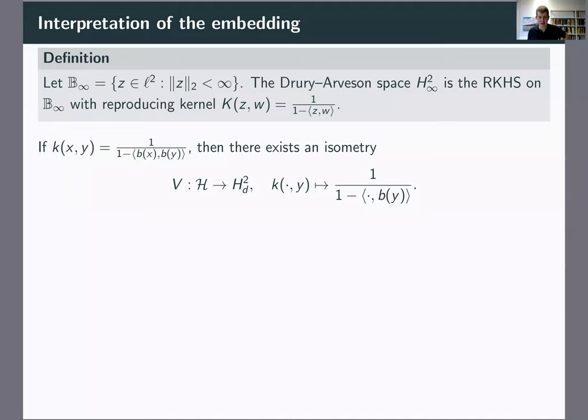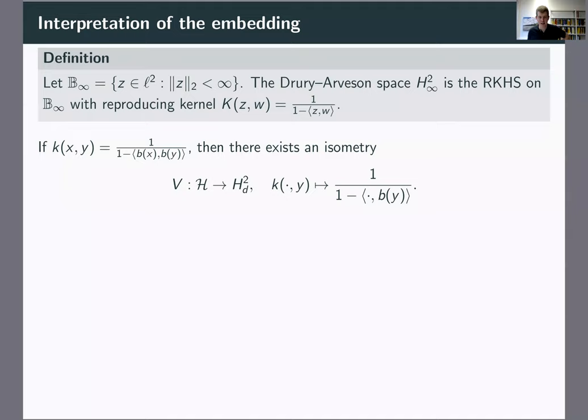Write B-infinity for the open unit ball in little l-two. Define the Drealison space on the open unit ball to be the reproducing kernel Hilbert space whose reproducing kernel is one over one minus Z inner product W — the only observation being that this formula makes sense on the open ball of little l-two as well. This is a version of the Drealison space in infinitely many variables. Many things carry over, but you need to be careful — some things don't work the same way, and as far as I know there is no good function-theoretic description of the Drealison space on the infinite-dimensional ball.